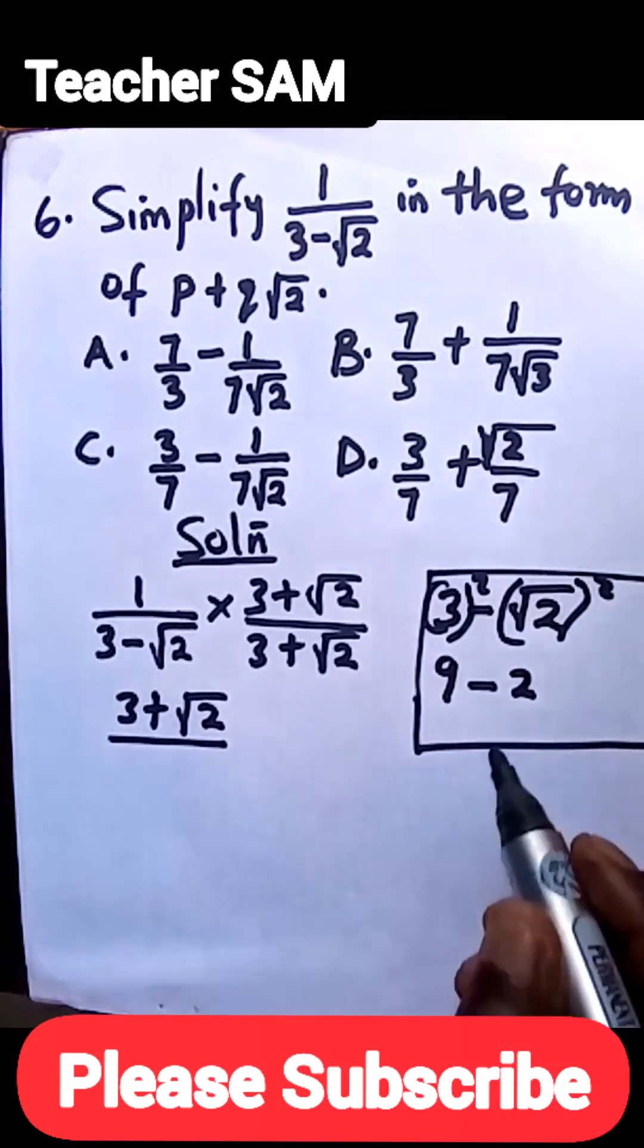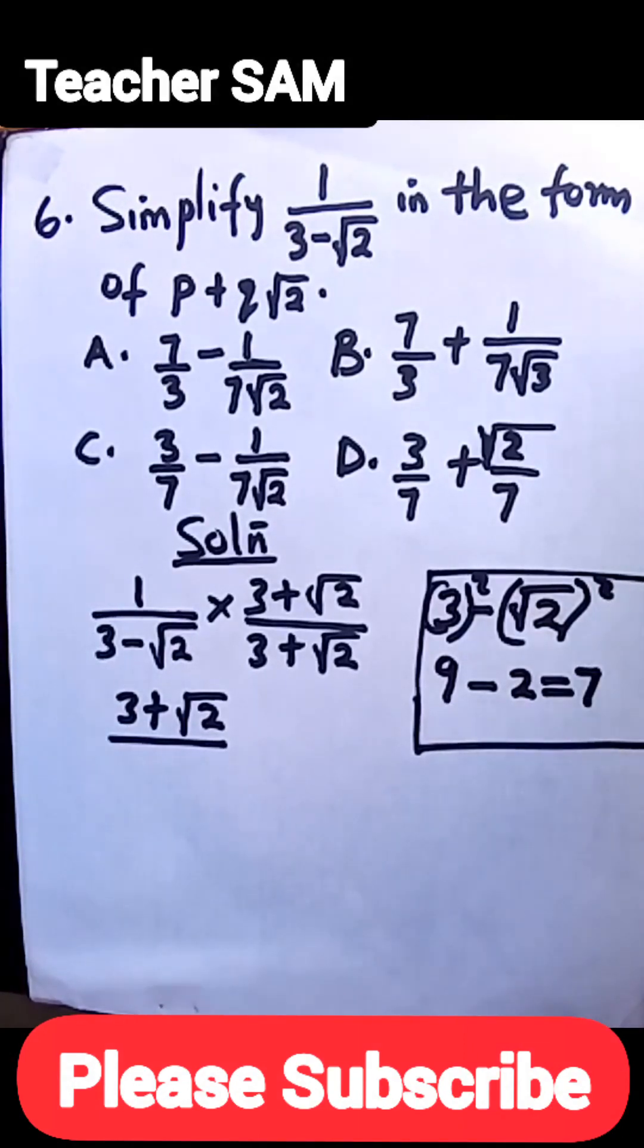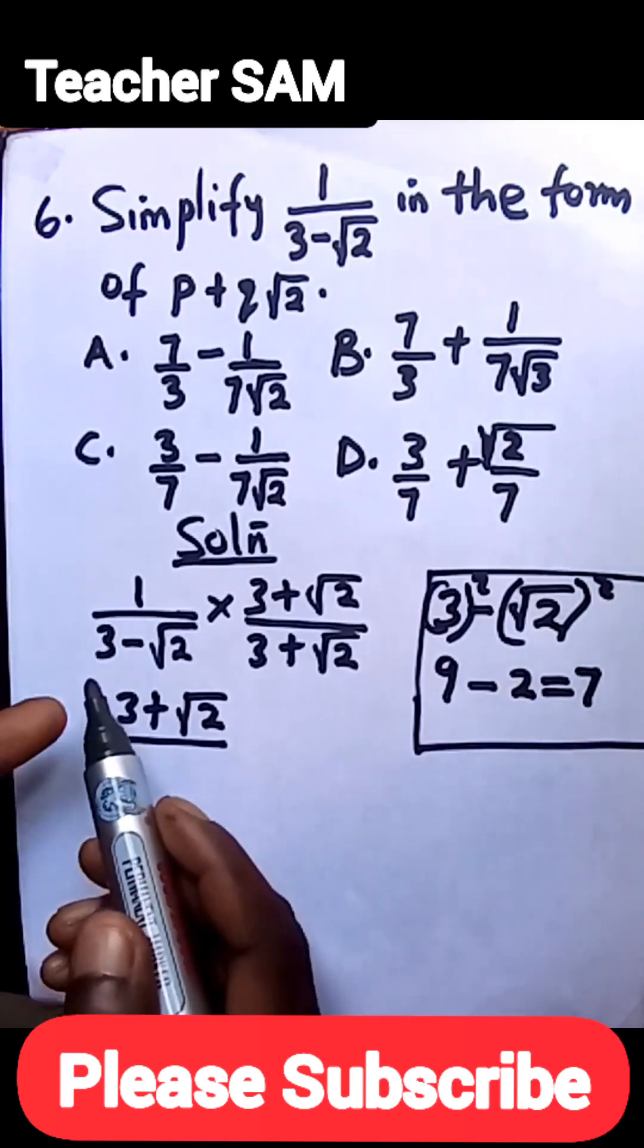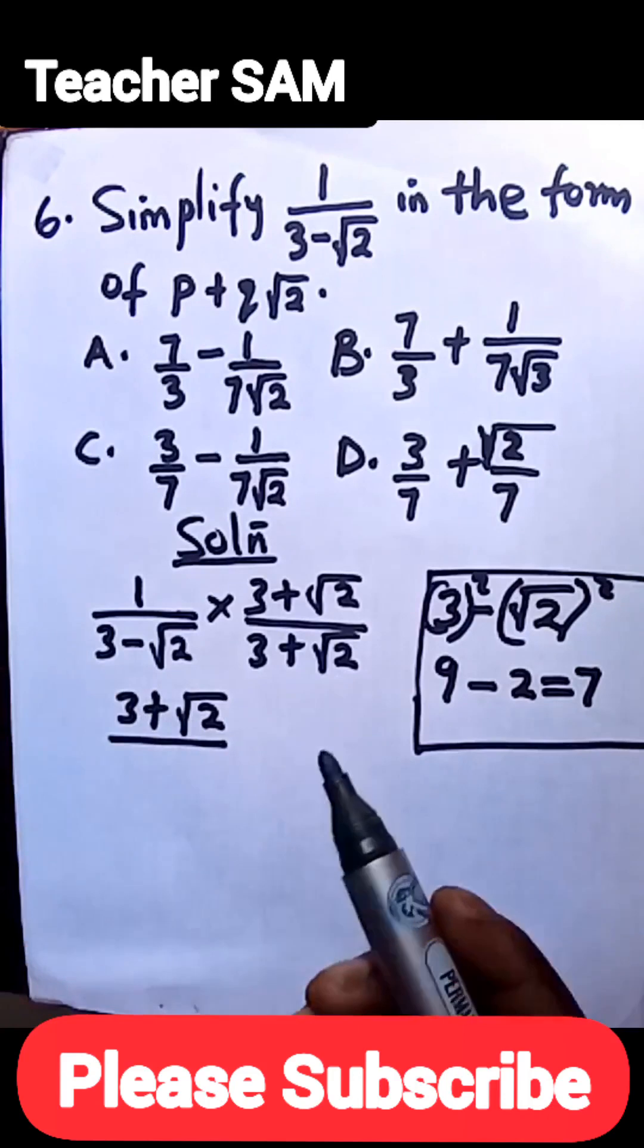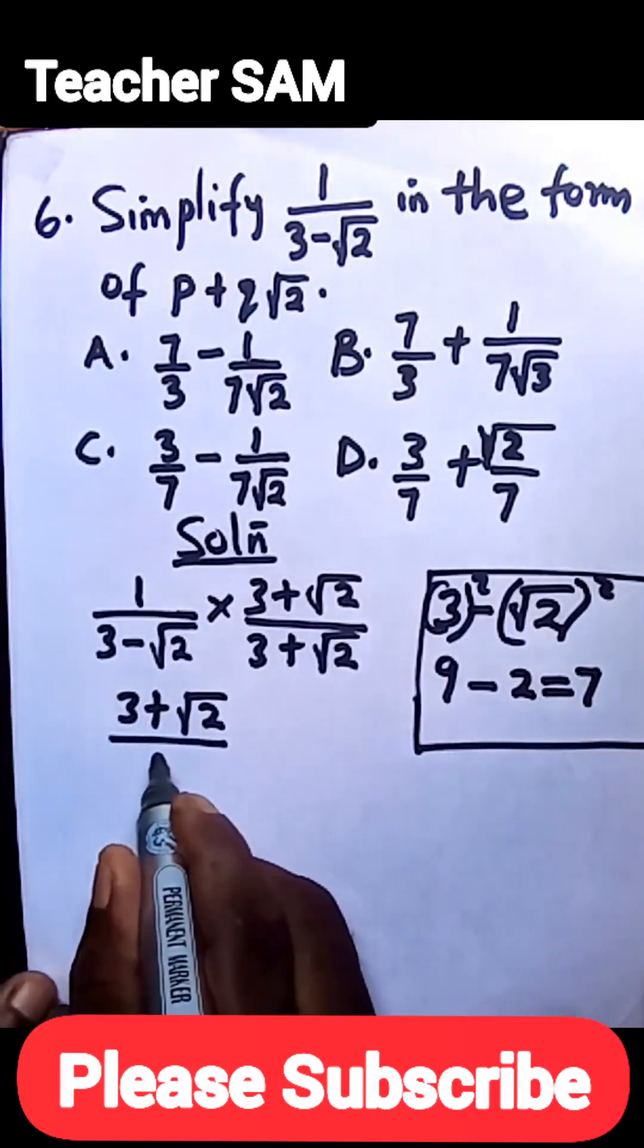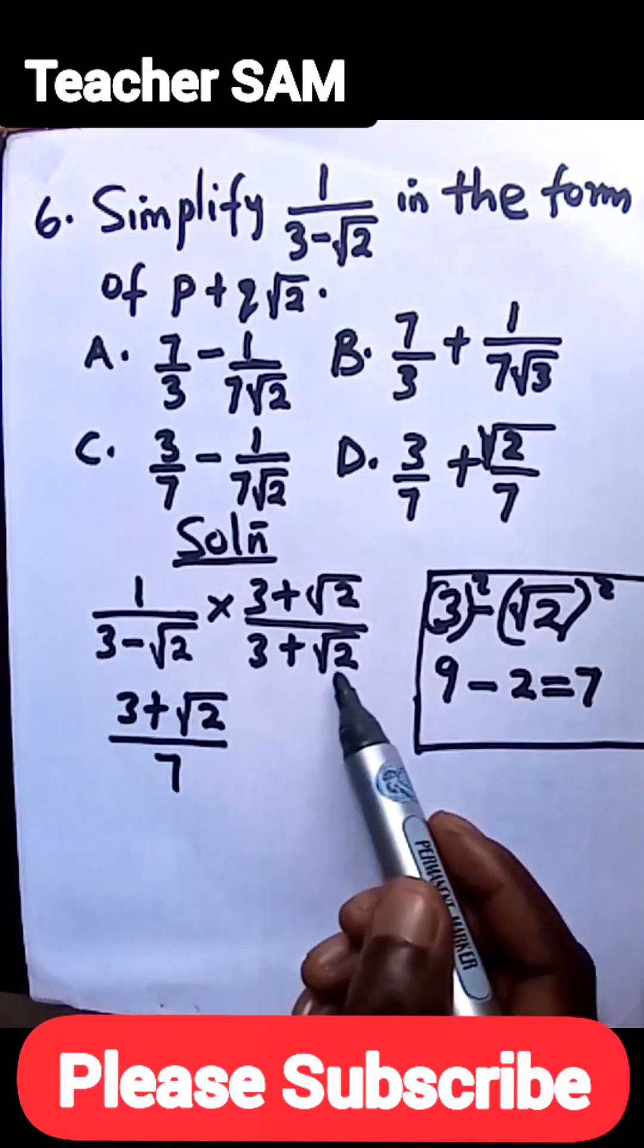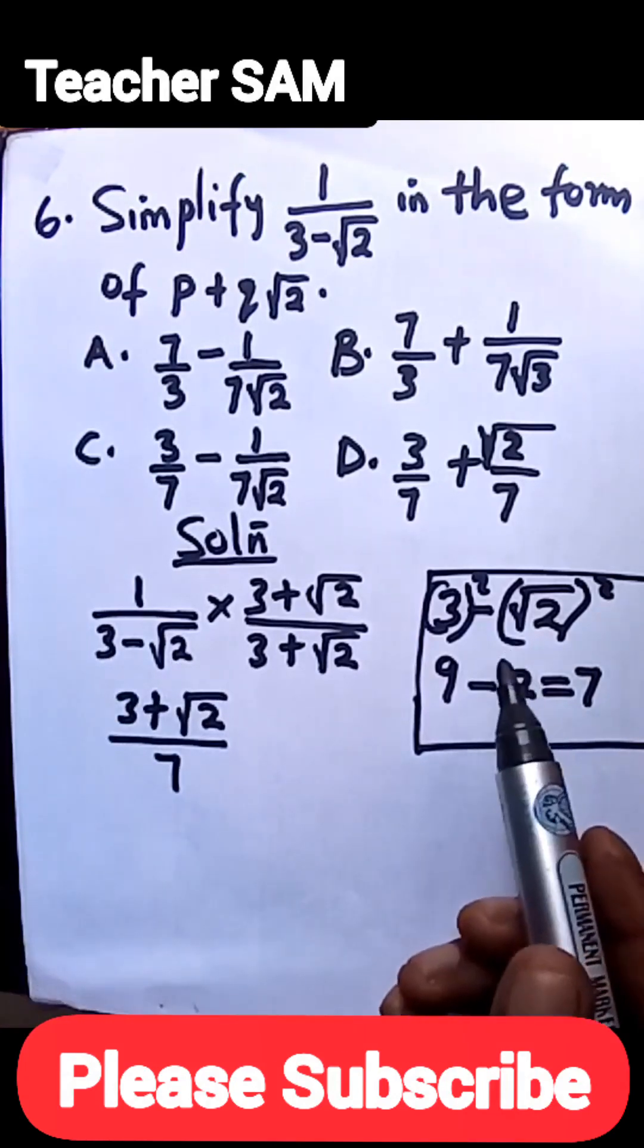So 9 minus 2 is 7. This is actually an NECO exam, so you can look at the simplest and easiest way to solve them. Instead of using this to multiply through and expand, which would take a little time, with this shortcut I have 7. If you expand it fully, you're going to get 7.